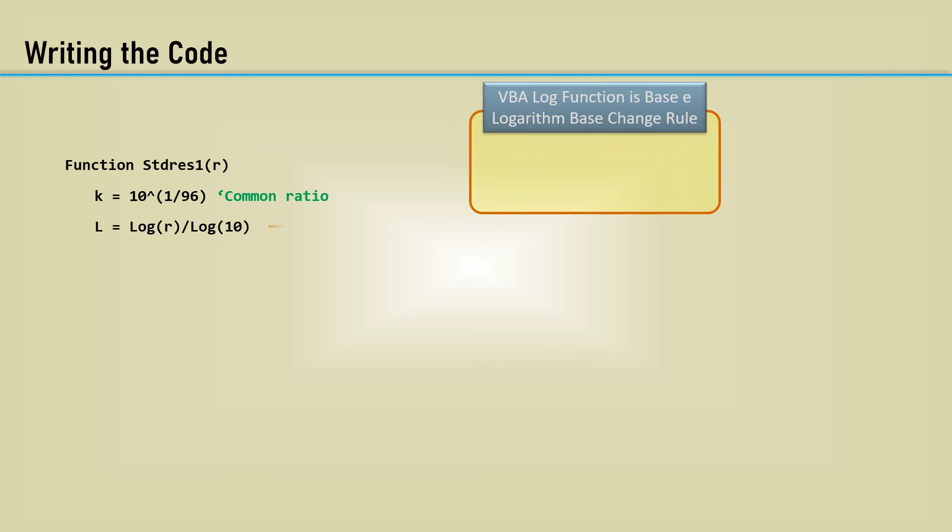Okay, let's code this thing up. I'll name the function stdres1 with the input argument R. Make K the common ratio for the E96 series. Now we need to get the log base 10 of the input variable R. But the VBA log function is base E, the base for natural logarithms. We can use the logarithm base change rule. We simply divide by the log of 10.